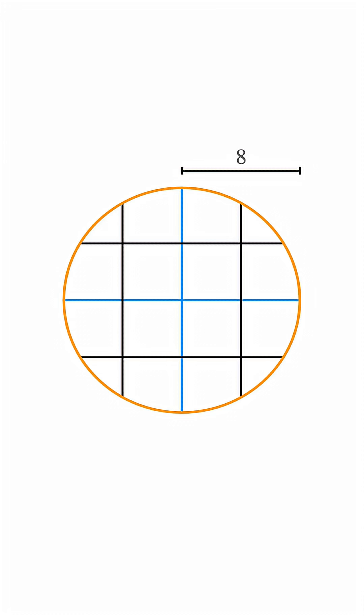First, notice that the full pizza has a radius of 8. So the area of the entire circle is pi times 8 squared, which equals 64 pi. This value will be important, so let's keep it in mind.